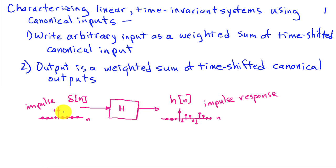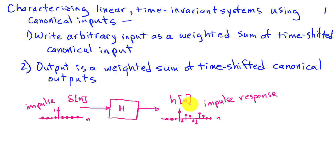We just put the amplitude of the signal at that corresponding shift location. If I apply an impulse to a system, I'm going to get the impulse response as my output. And once I know how the system reacts to this single impulse, I can determine how the system reacts to an arbitrary input, because I'll have that arbitrary input described as a weighted sum of delayed impulses, and that implies the output is a weighted sum of delayed impulse responses.